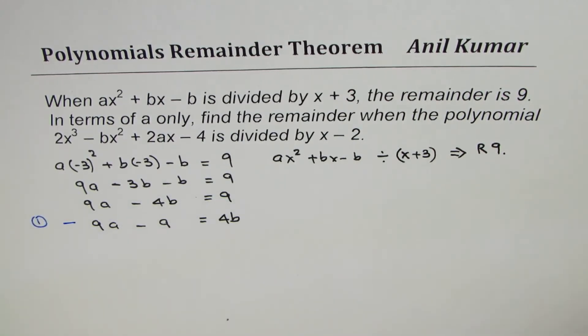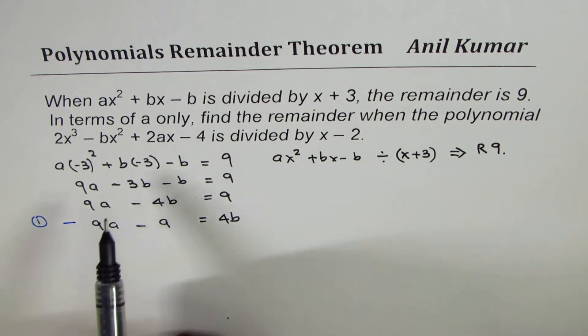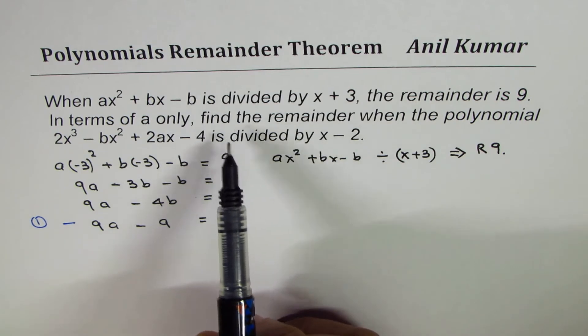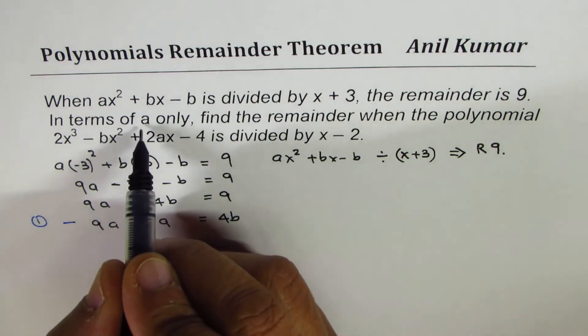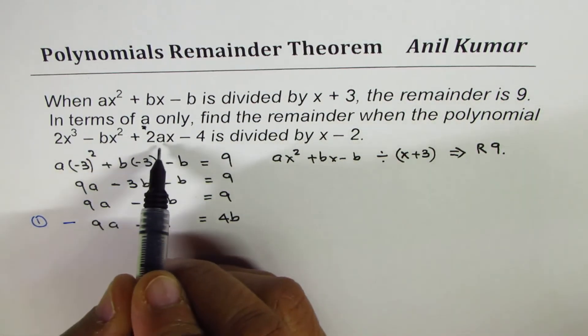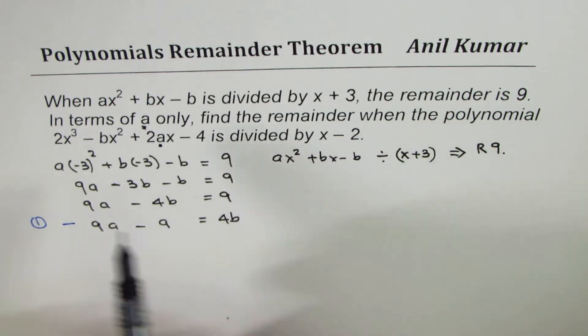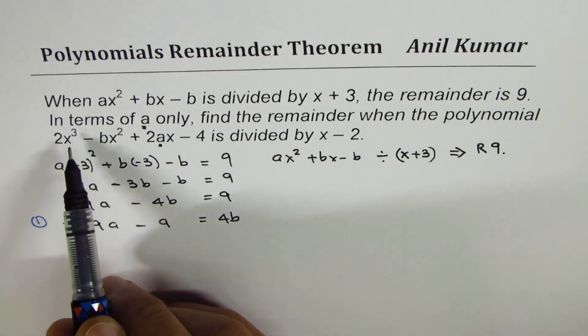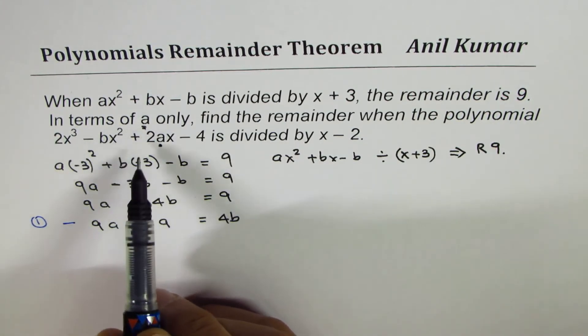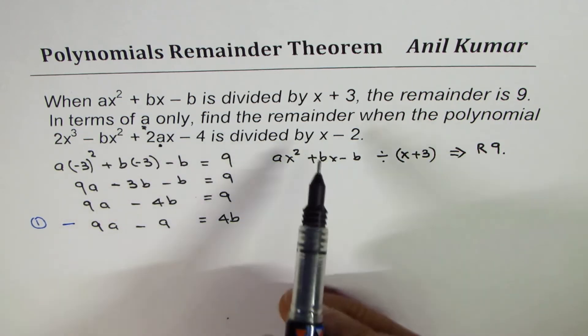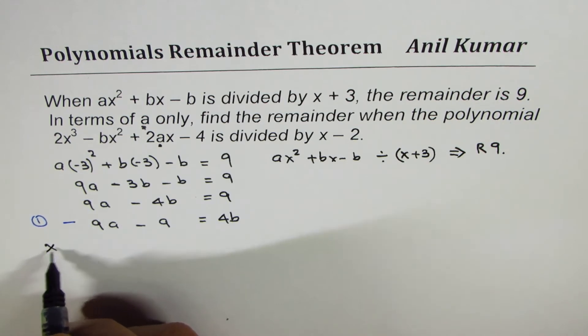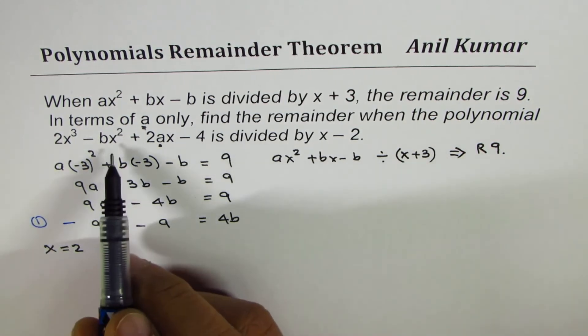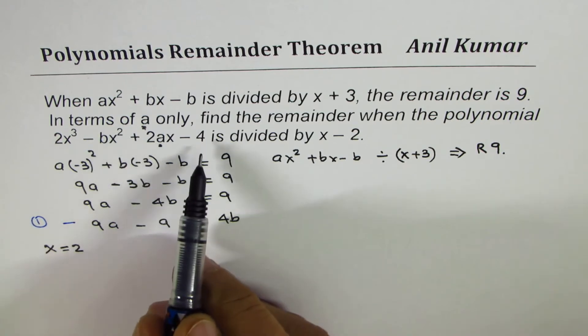We really have to solve in terms of a and therefore I'm keeping this a as such. Second part of this question is in terms of a only. Find the remainder when polynomial 2x cube minus bx square plus 2ax minus 4 is divided by x minus 2. That is to say that if I substitute x equals to 2, what is the value of this polynomial.